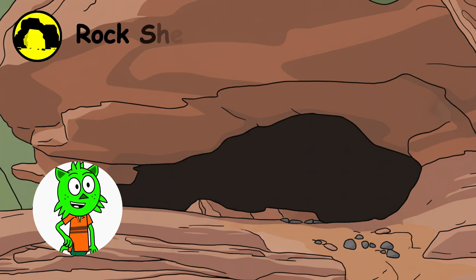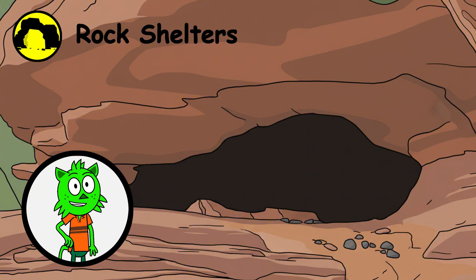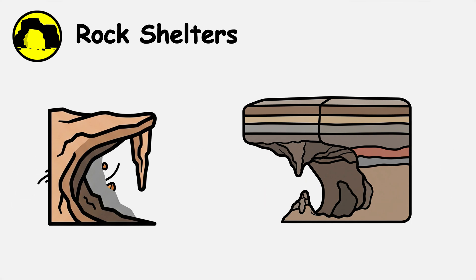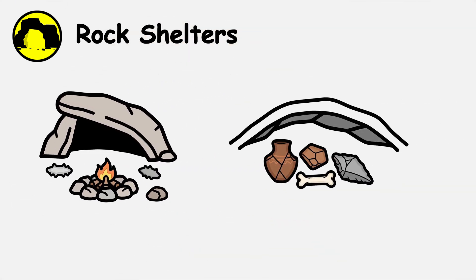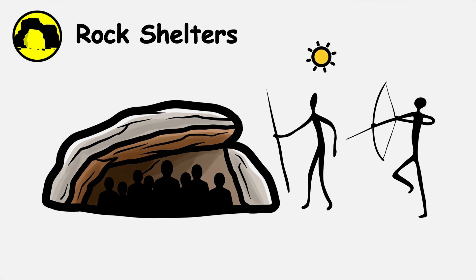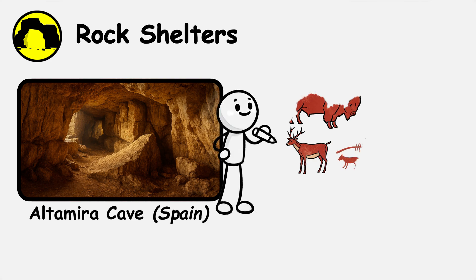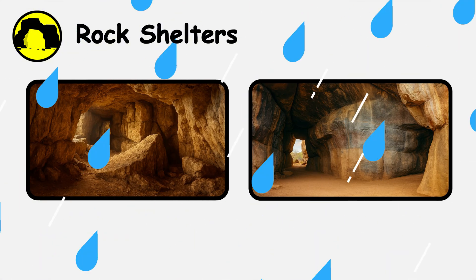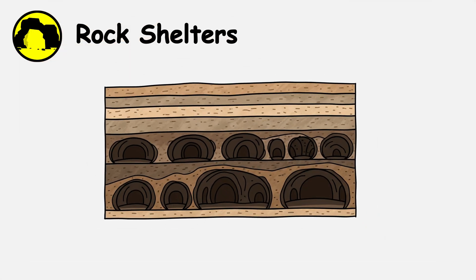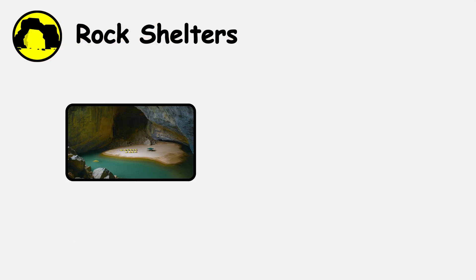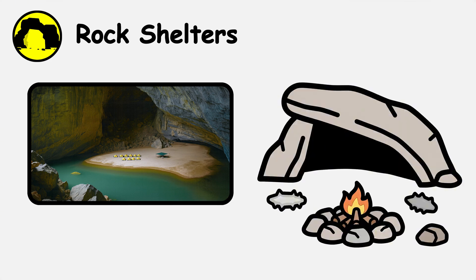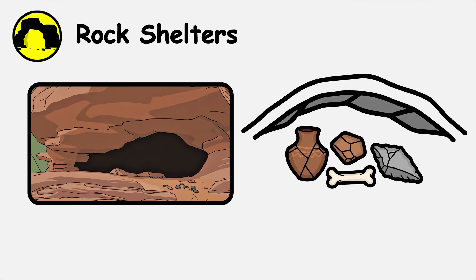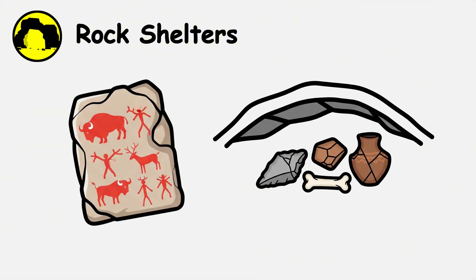Rock Shelters. Rock shelters form when cliff faces erode unevenly, creating overhangs. Wind, rain, and freeze-thaw cycles gradually hollow out softer rock layers beneath more resistant ones. Rock shelters hold tremendous archaeological importance as ideal habitation sites for prehistoric humans. Altamira Cave in Spain contains 14,000-year-old Paleolithic paintings, while Bhimbetka in India features art spanning 30,000 years of human history. Protected from rain yet well-lit and easily defended, rock shelters served as humanity's first apartment buildings. Unlike deep caves with constant temperature, rock shelters experience greater environmental fluctuations while providing significant protection. This semi-sheltered environment sometimes preserves artifacts that would decay in open sites, making them invaluable time capsules.